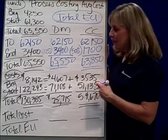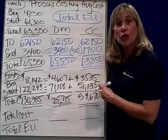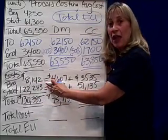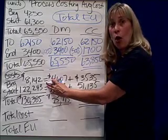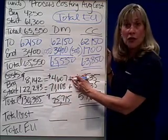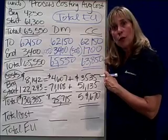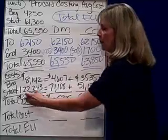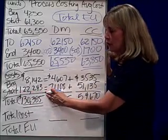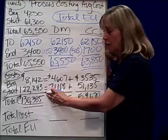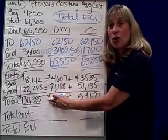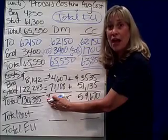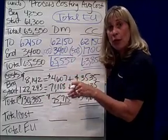Step three is: account for your costs. As a manager, I know that my beginning inventory has $8,142 of costs. Some of those costs have to do with materials, and some have to do with labor and overhead. We started $122,243 of cost. So as a manager, I am accountable for a total of $130,385 in my department, in my WIP account.